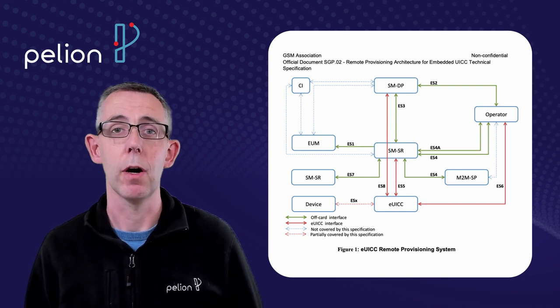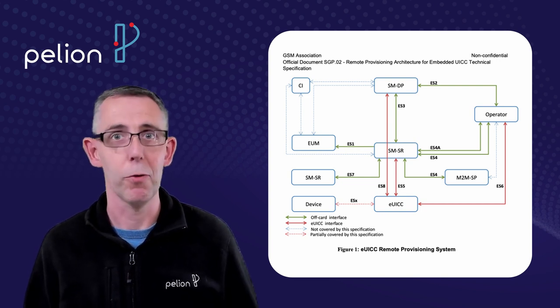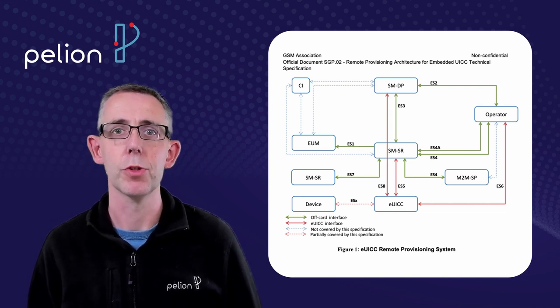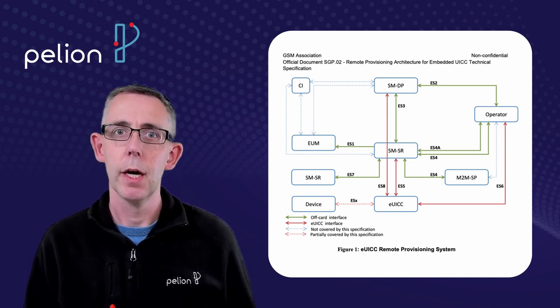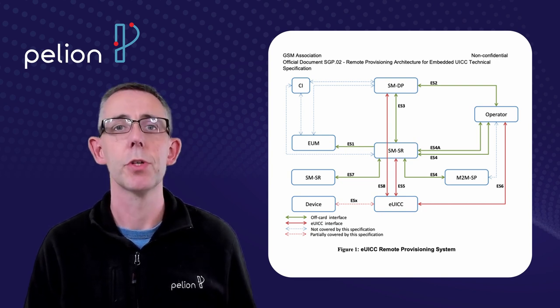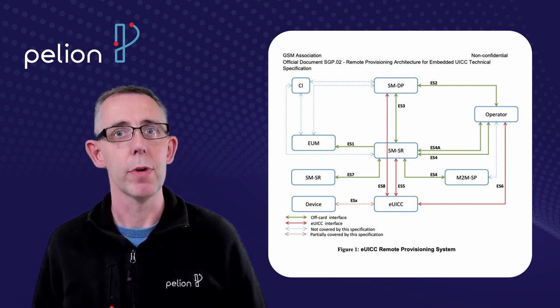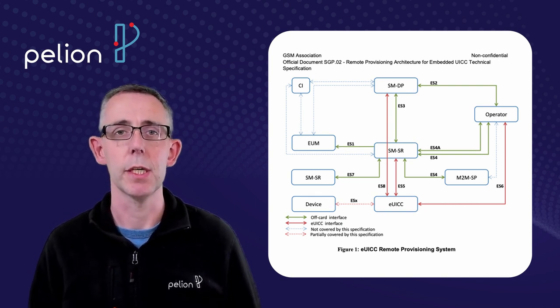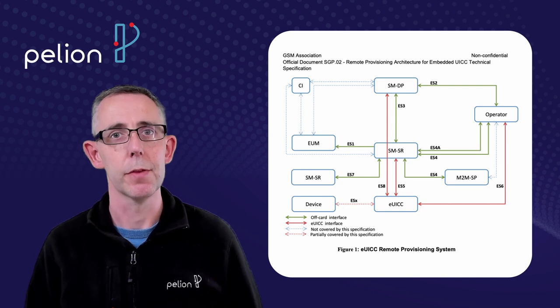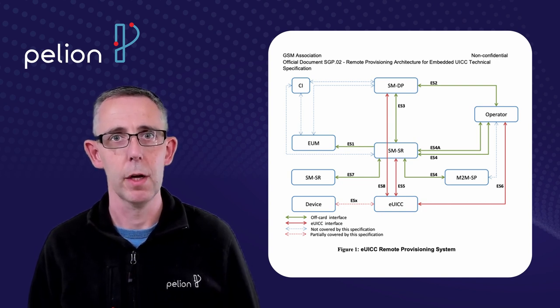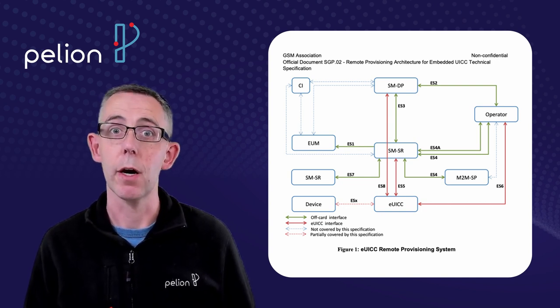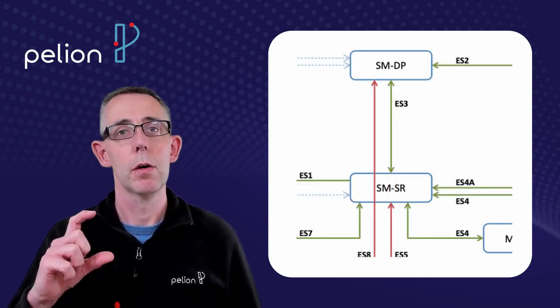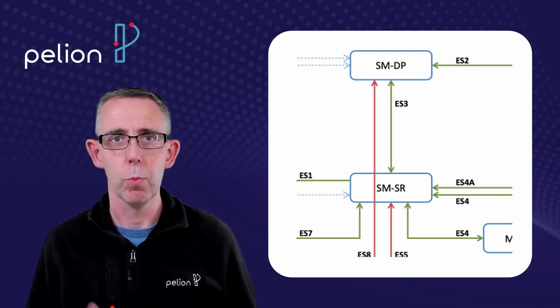The GSMA profile switching specification is 400 pages long but at the heart of it is this diagram and this shows the relationship between EUICC and eSIM manufacturers, mobile network operators, system vendors, the end device that has the EUICC in it and some of the services that control all of that. Right in the middle of that diagram are the two SMDP and SSR blocks and they're a good place to start.